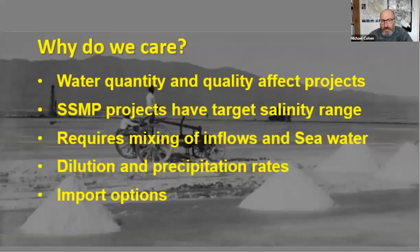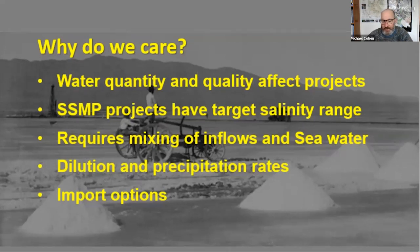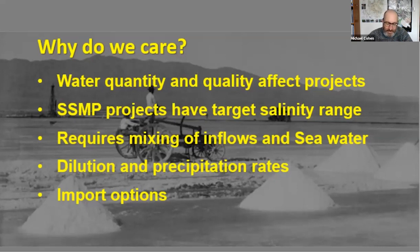Some key questions on why we're looking at salinity at the Salton Sea: water quantity and water quality affect projects being built there. The Salton Sea is currently hosting a species conservation habitat at the south end — a roughly 4,000-acre, $200 million project — directly affected by the quantity and quality of water flowing into it. The target salinity range of that project is 20 to 40 grams per liter of salt.